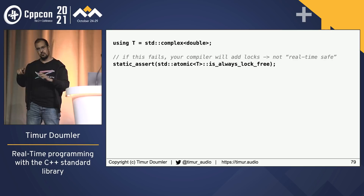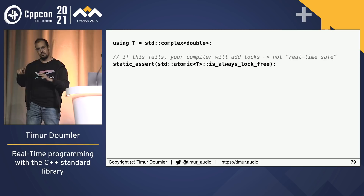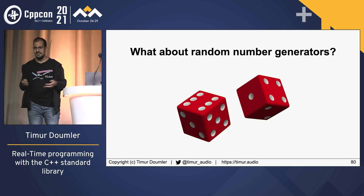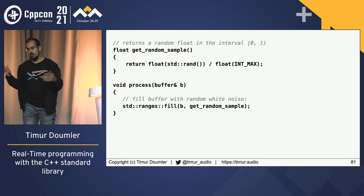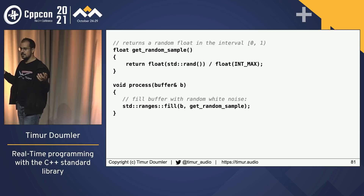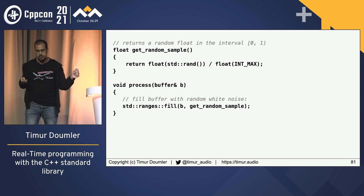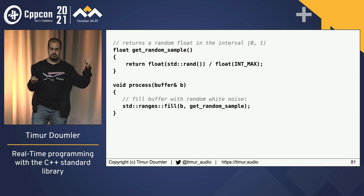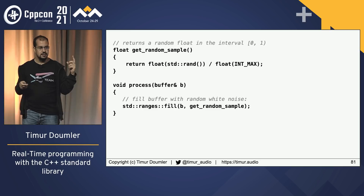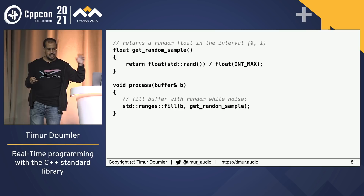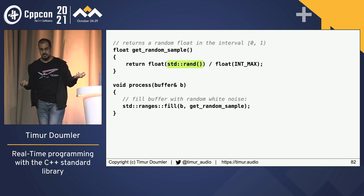One other topic: generating random numbers. In audio processing you often need to generate noise — floating-point numbers between 0 and 1. By far the most common implementation I see is using std::rand. There's a bug in the typical usage: the result can actually return 1, but that's not the main problem. The bigger problem is that people are still using std::rand to generate random numbers.